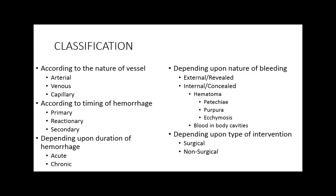According to the timing of the hemorrhage, we classify it as primary, reactionary, and secondary hemorrhage. Primary hemorrhage occurs at the time of injury or surgery — the bleeding happens immediately when the cut is made. Reactionary hemorrhage occurs after surgery, within 24 hours, for some reason. Secondary hemorrhage occurs after 2 to 5 days — due to pressure, a blow, or some other event causing the bleeding to recur.